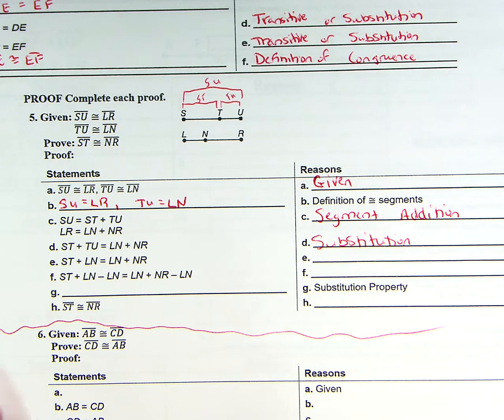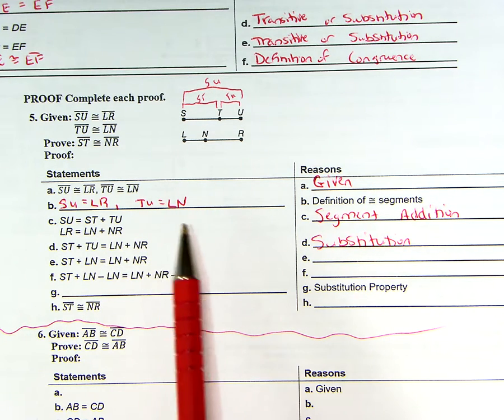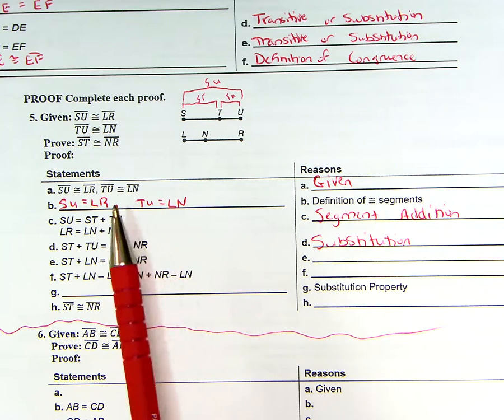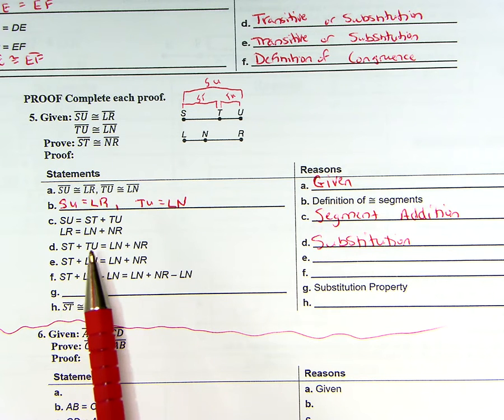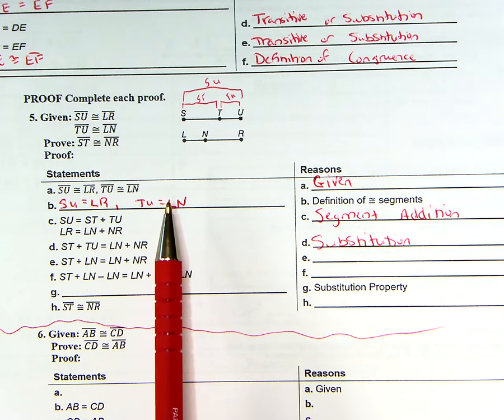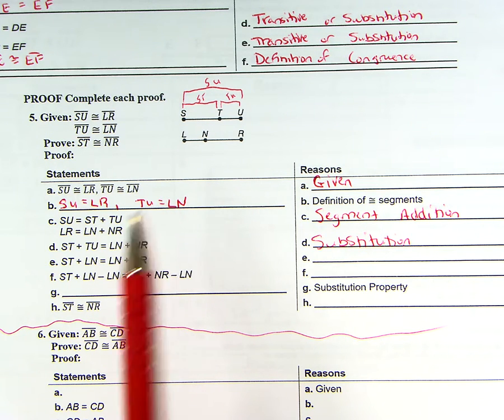Now this given right here, the TU equals the LN, this is where they did this next move. So E now says, instead of ST plus TU, it's ST plus LN. Well, what did they do? They substituted in LN for TU.